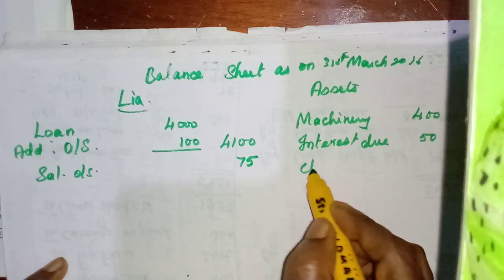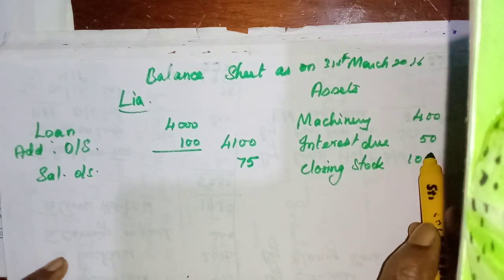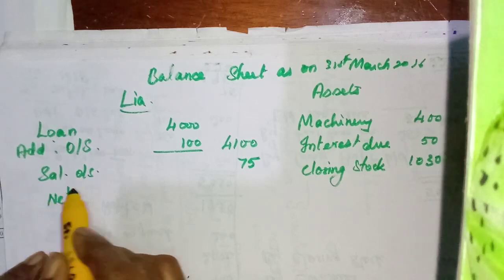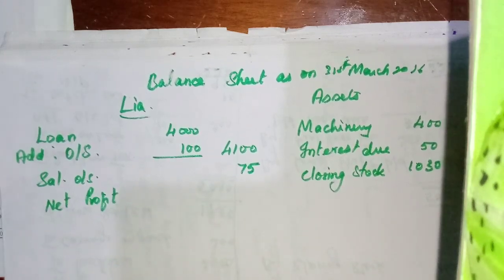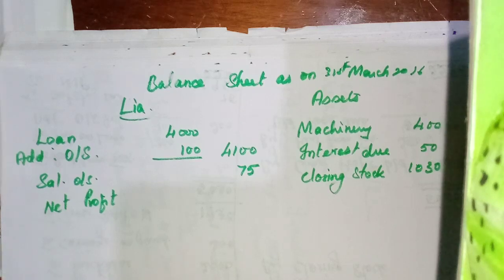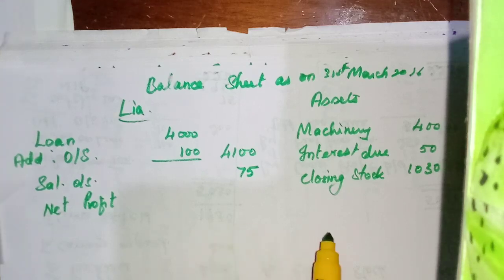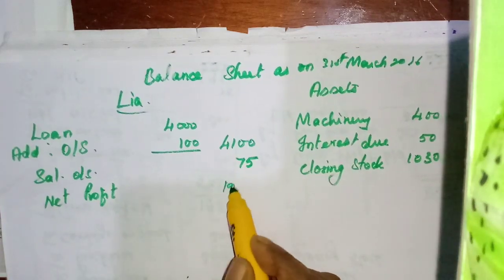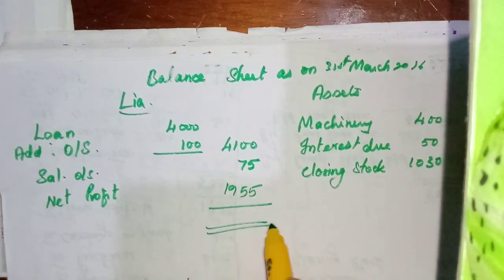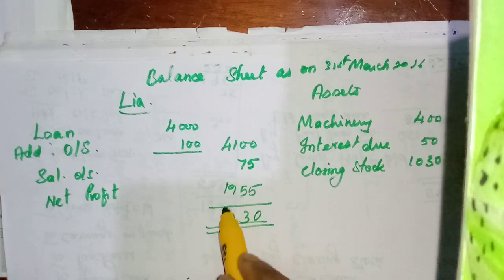Closing stock 1,030. Net profit — here capital is not given. That trial balance of Sumati, if we add the trial balance we do not get the same amount, so this will not tally. Net profit: we have got figures — debit side 3,600, credit side 6,250.